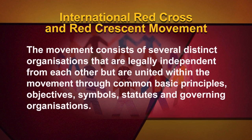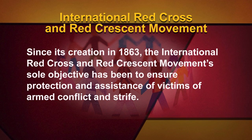The movement consists of several distinct organizations that are legally independent from each other but are united within the movement through common basic principles, objectives, symbols, statutes and governing organizations. Since its creation in 1863, the International Red Cross and Red Crescent movement has worked to ensure protection and assistance of victims of armed conflict and strife.